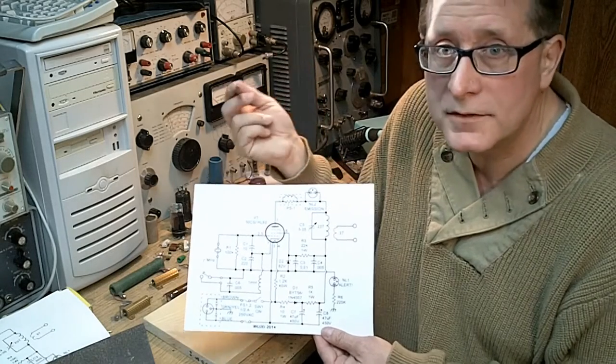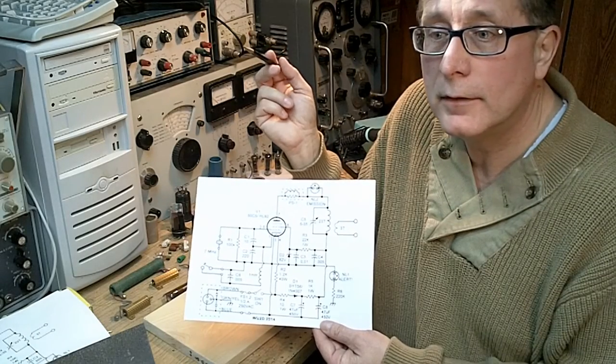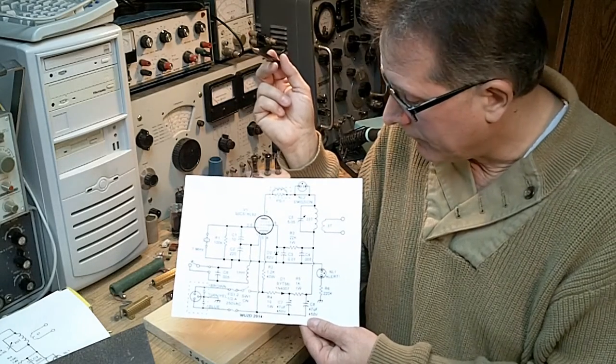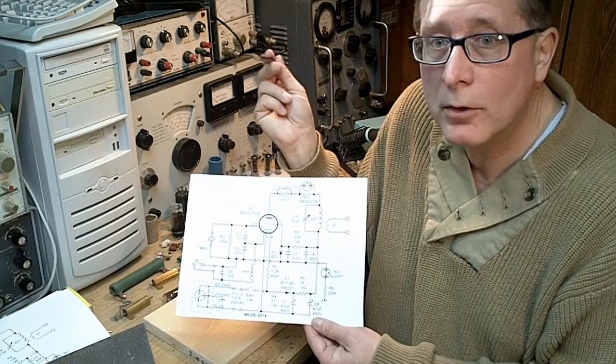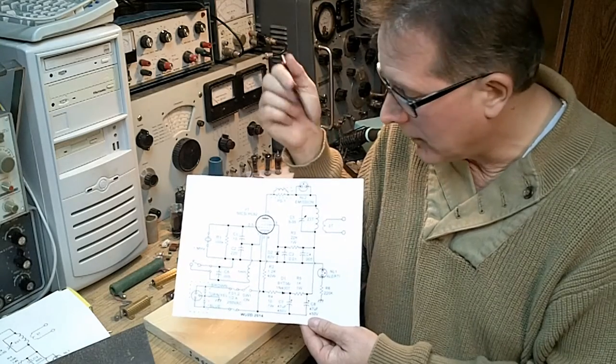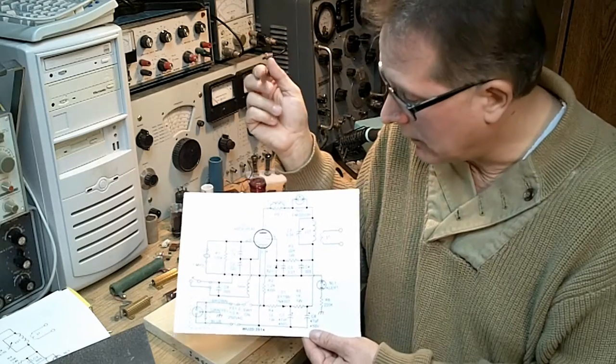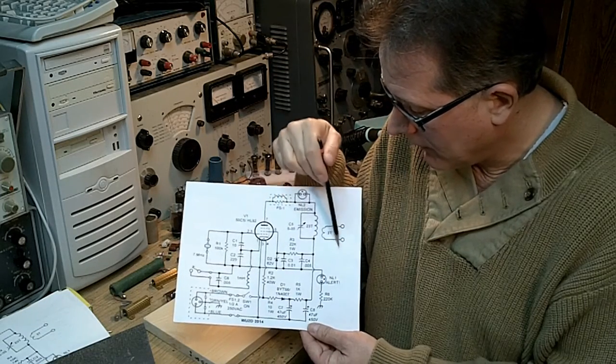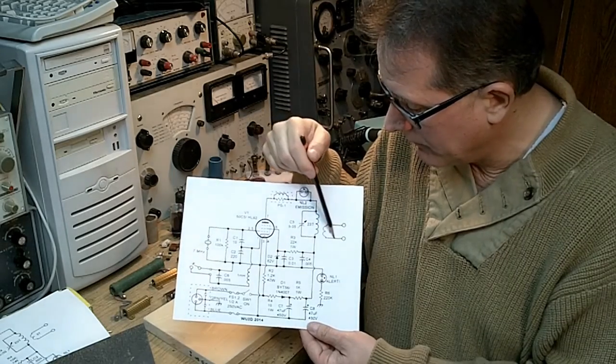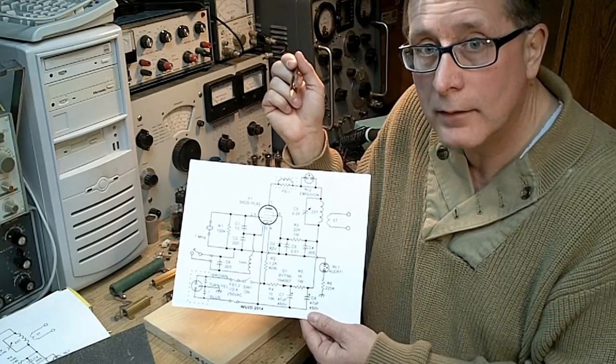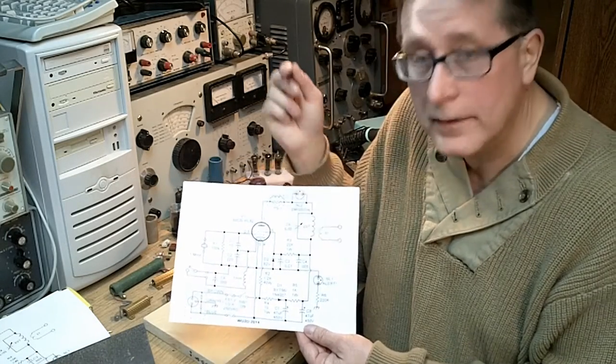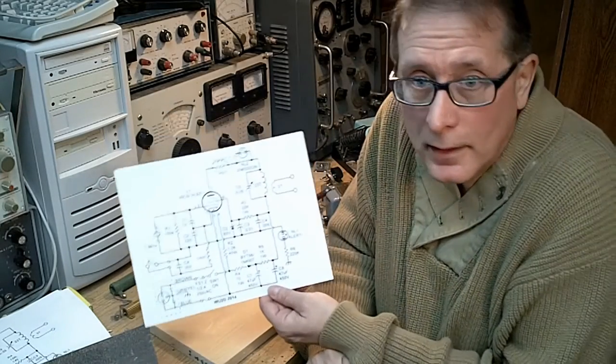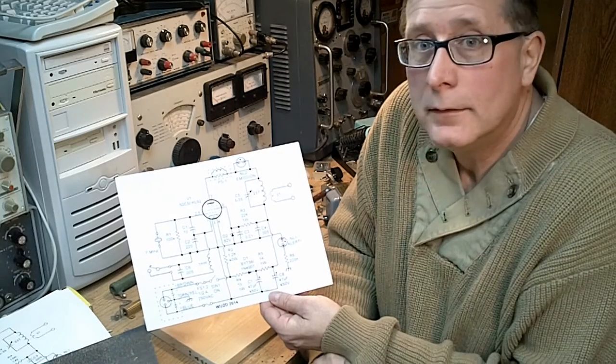A good antenna for 40 meters, for instance, would be 70 feet of TV twin lead going to a 70 foot dipole. You could also use television 75 ohm coax or ordinary 50 ohm coax, but a dipole with this transmitter will provide excellent results. The ideal transmitting antenna for this 40 meter transmitter would be a 40 meter dipole, so 20 meters of wire with a 20 meter feed line.